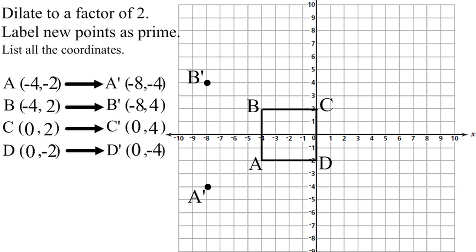C prime is 0, 4. So it's neither left or right, and you go up 4. Put the point there and label it C prime.